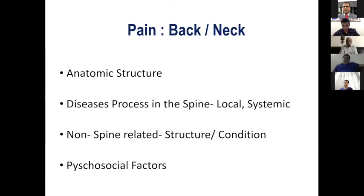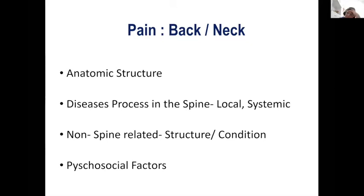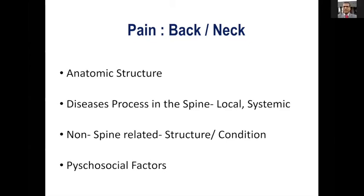When evaluating pain in the back and neck, from just the history we should try to narrow down what anatomic structure is involved. We need to filter out whether the disease process in the spine is local, systemic, or a non-spine-related problem — for example, a visceral problem like retroperitoneal fibrosis or a tumor in the abdomen compressing a nerve root and causing radiated pain. Psychosocial factors are important too — is it a non-organic pain or a dramatization of pain?